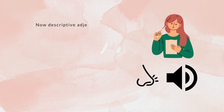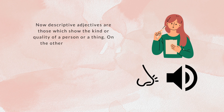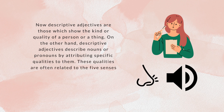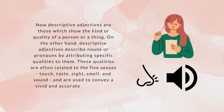Descriptive adjectives are those which show the kind or quality of a person or a thing. They describe nouns or pronouns by attributing specific qualities to them. These qualities are often related to the five senses — touch, taste, sight, smell, and sound — and are used to convey a vivid and accurate image of the described noun or pronoun.